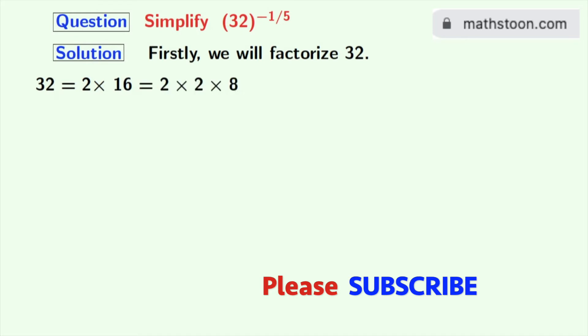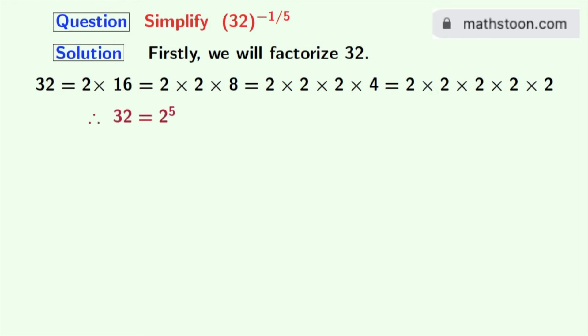Following the same way, 8 is equal to 2 times 4 and 4 is equal to 2 times 2. Now see that all these numbers are prime numbers, so we will stop factorizing. As this is the product of 5 number of 2's, we get finally 32 is equal to 2 power 5.